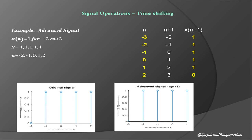We plot the graph between x[n+1] and n, which gives the advanced signal. The range of n is now minus 3 to 1, for which x[n+1] equals 1. This is the advanced signal — we plot the graph between the first and second columns to get this result.